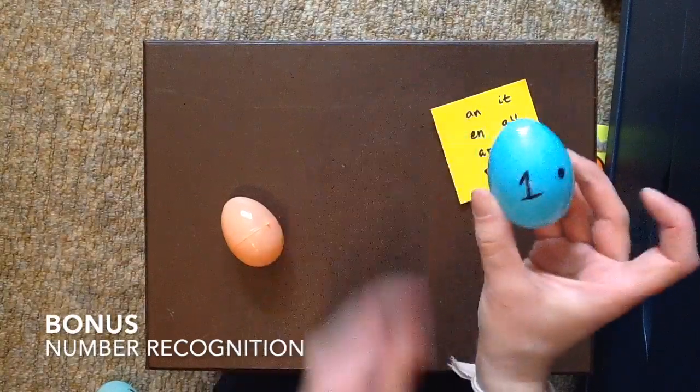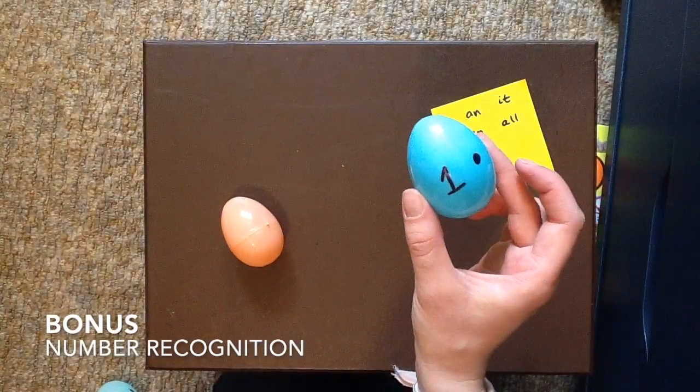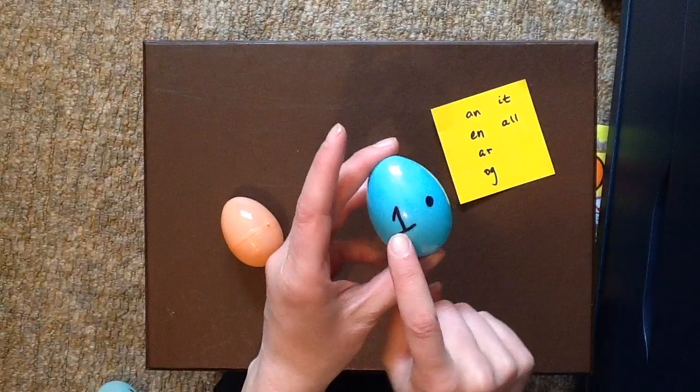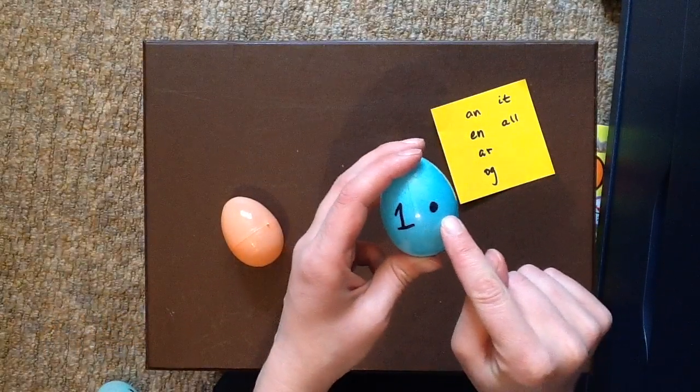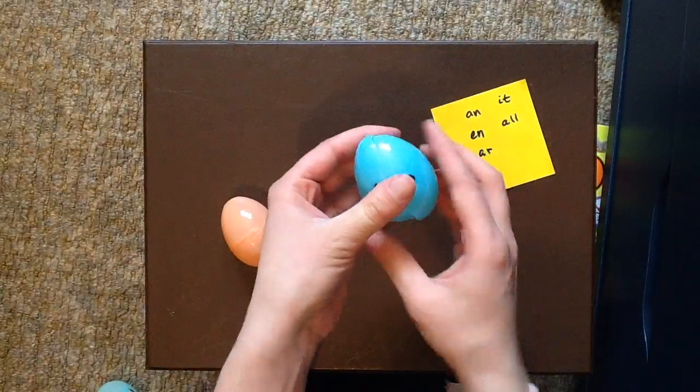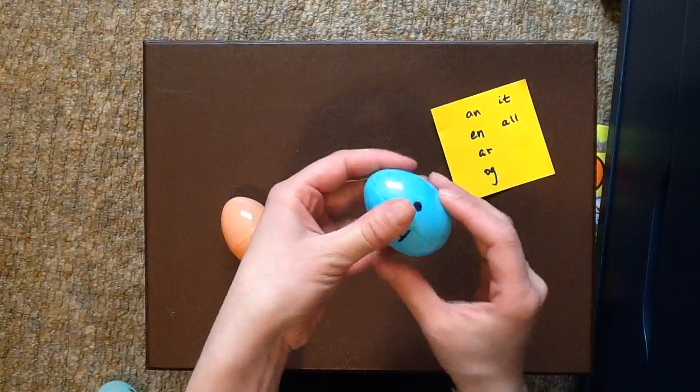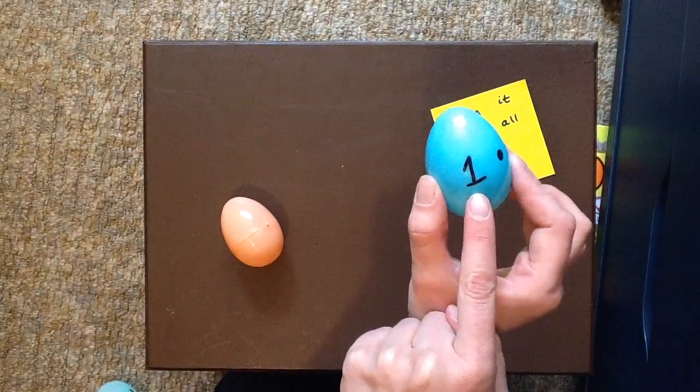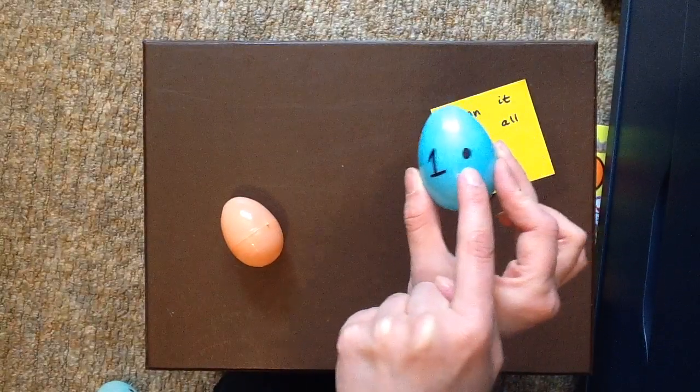Another thing you can do is use it to do number recognition for even smaller kids. So you put a number on one side and then the number of dots on the other side. Then you can have them all split around and the color helps your child learn to put them together. So they'll think blue and blue is the same, and then they'll learn that one looks like this and one looks like that.